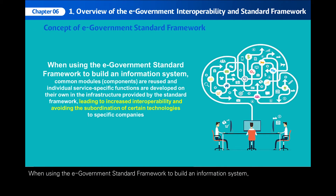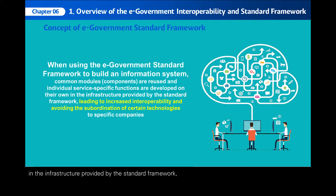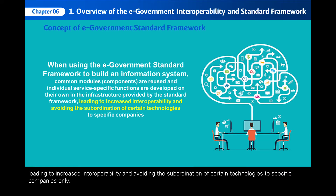When using the e-government standard framework to build an information system, common modules, as the components, are reused and individual service-specific functions are developed on their own in the infrastructure provided by the standard framework, leading to increased interoperability and avoiding the subordination of certain technologies to specific companies only.